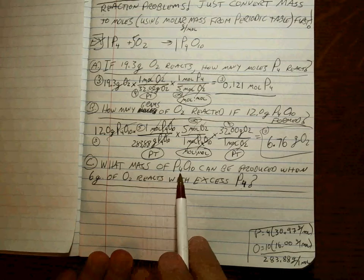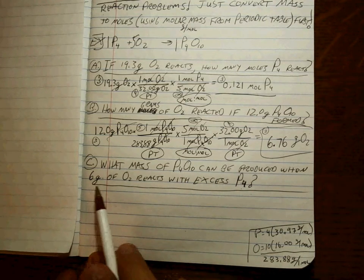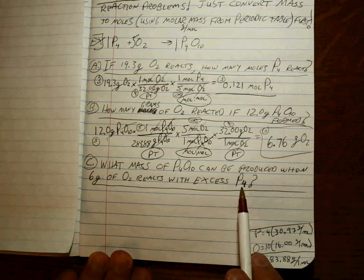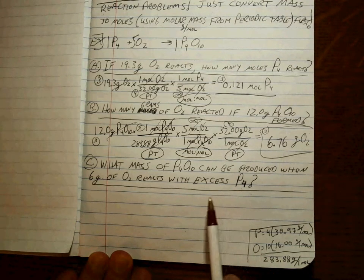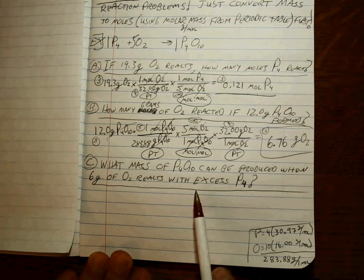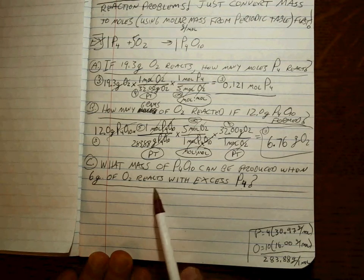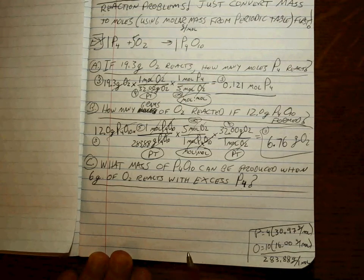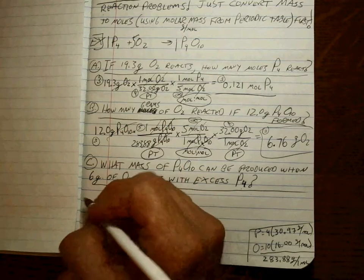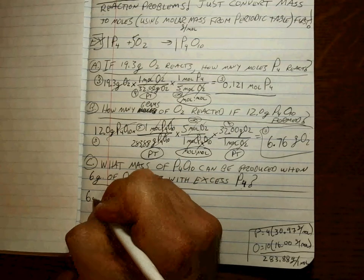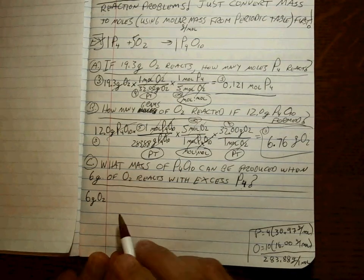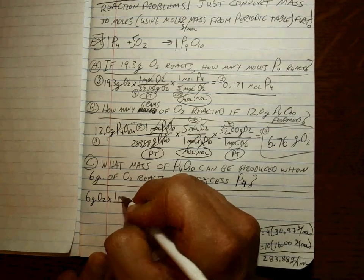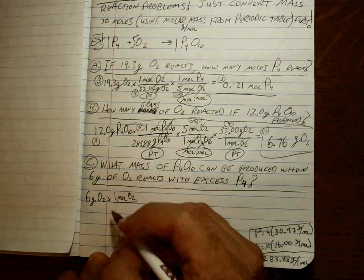Okay, one last problem to deal with here. What mass of P4O10 can be produced when six grams of O2 reacts with excess P4? You know, when you think about this, this is really a limiting reagent problem, isn't it? It's a limiting reagent problem where we know which is the limiting reagent, because they told us which is the excess reagent. O2 is going to be our limiter.